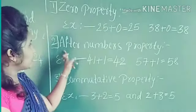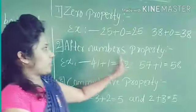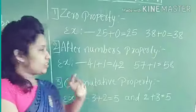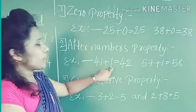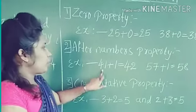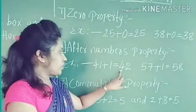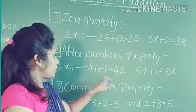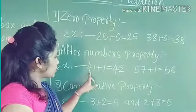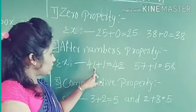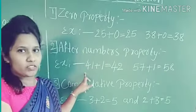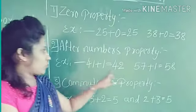Let's learn the after number property. When we add 1 to a number, we get the after number of that number. For example, what is the after number of 41? Yes, 42.